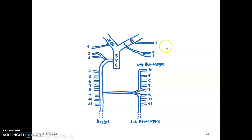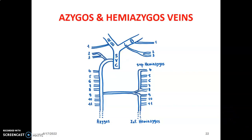The first intercostal veins drain into the brachiocephalic trunk, left and right correspondingly. The second and third intercostal veins drain into the brachiocephalic trunk on the left, while they unite on the right to drain into the azygos vein before it terminates on the superior vena cava. The azygos vein terminates at the superior vena cava at the sternal angle of Louis, at the junction between the superior and inferior mediastinum. That is the overview of the azygos system for an essay question.